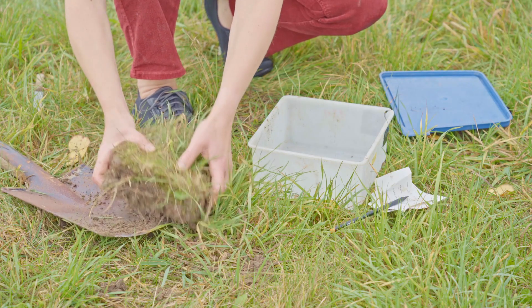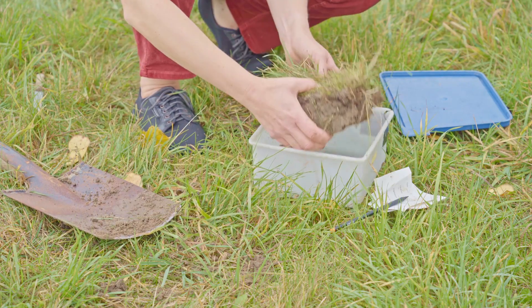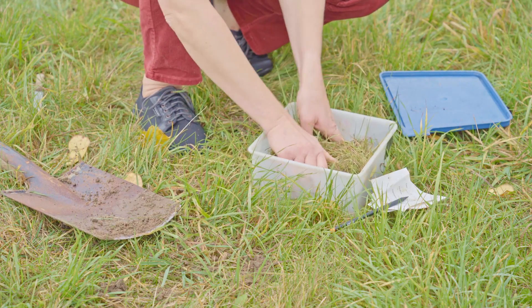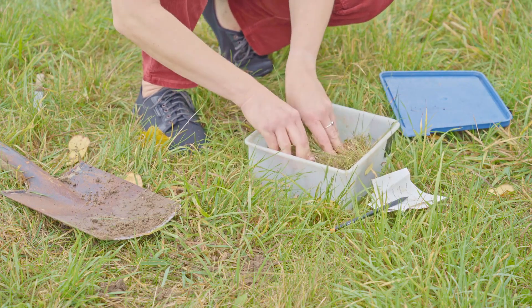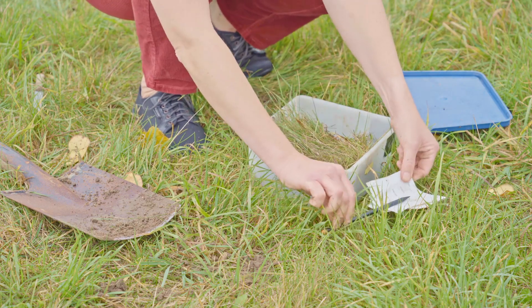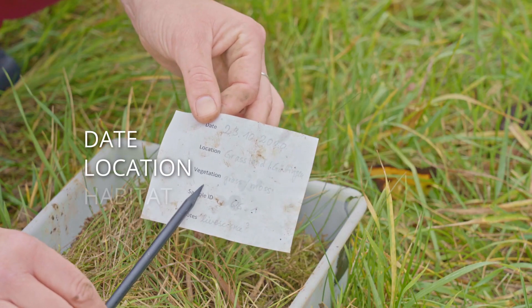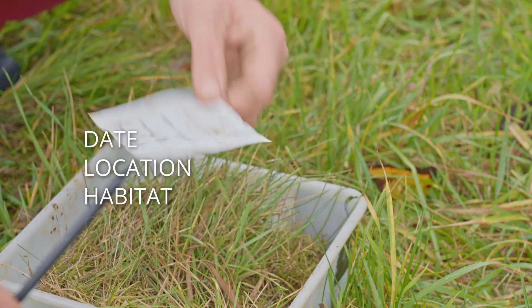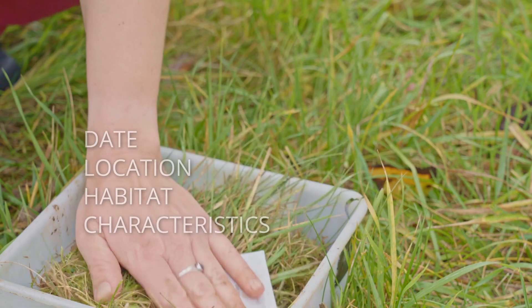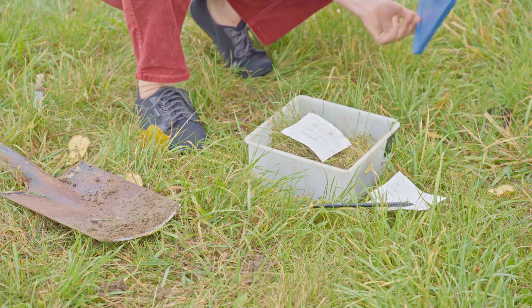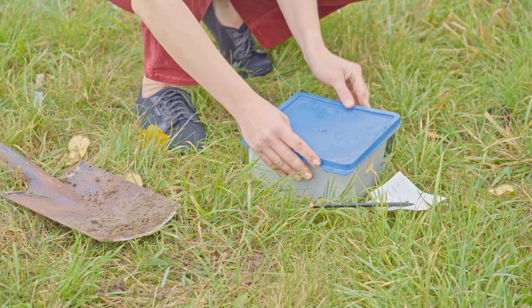Try to keep the grass patch intact and put it into your plastic bag or box. Add the label with date, location, habitat, and characteristics. Seal the container and carry it home.